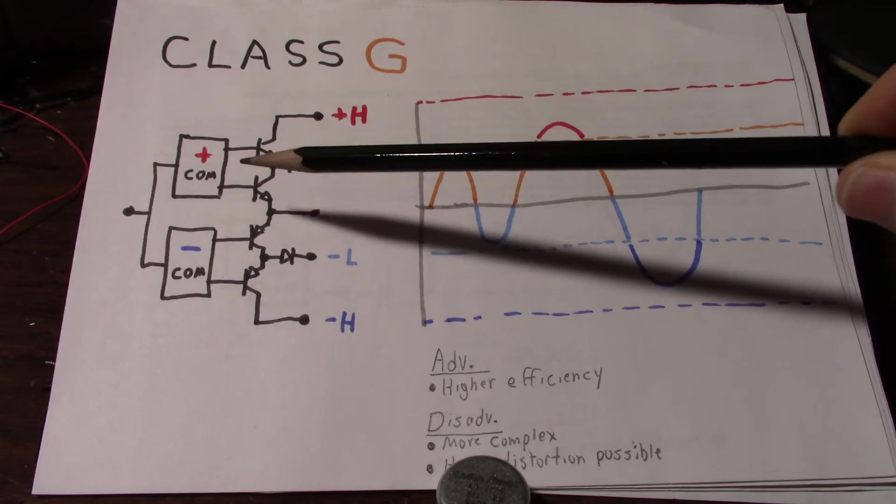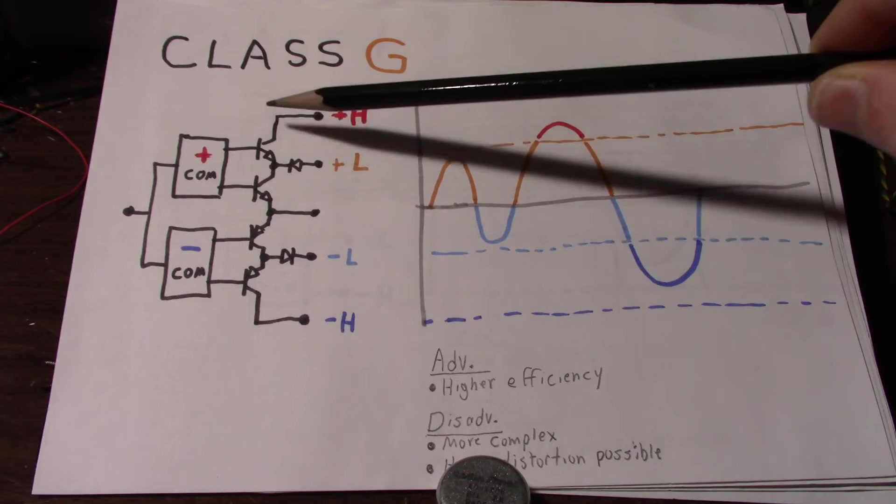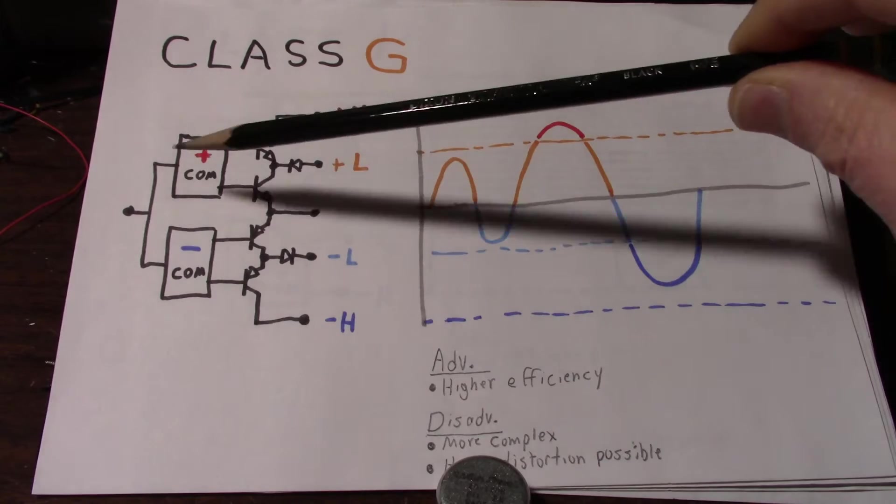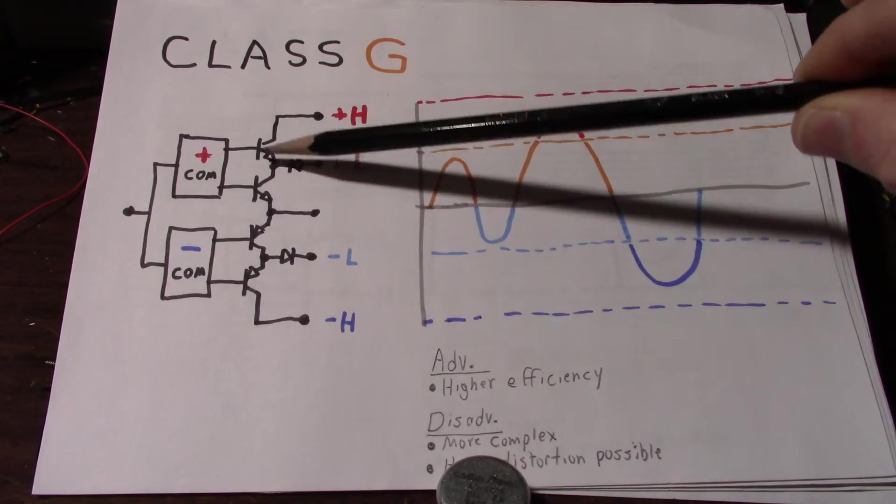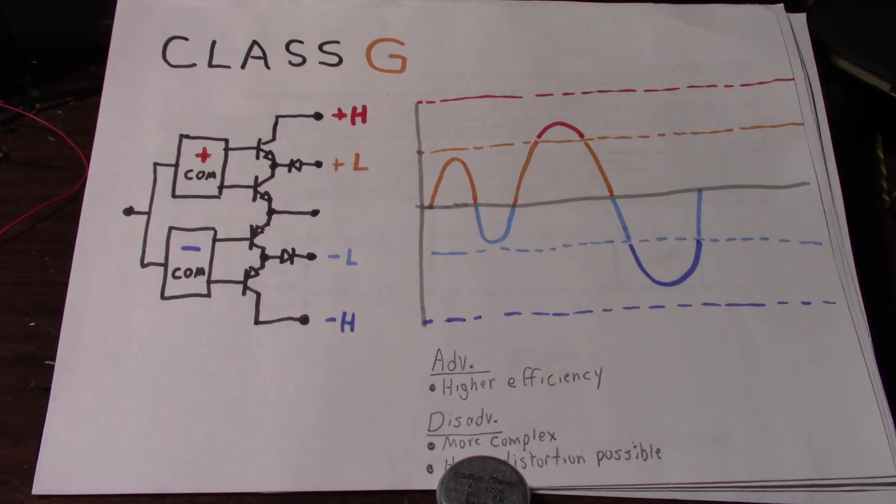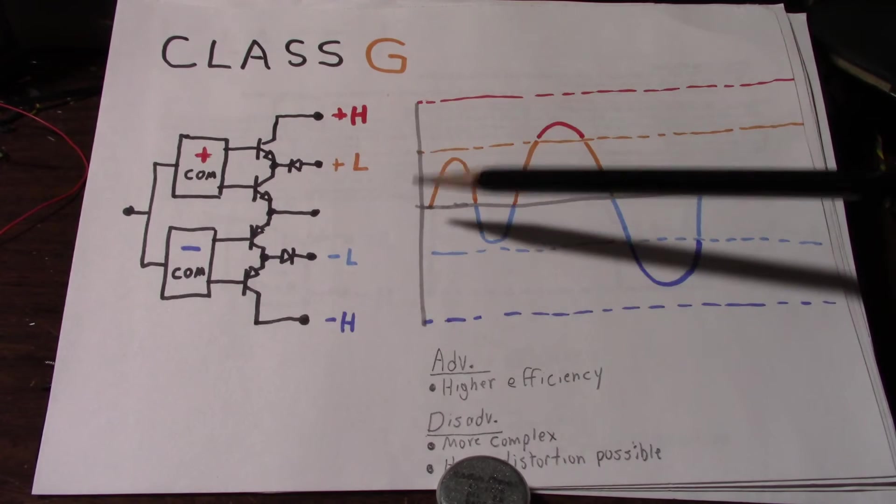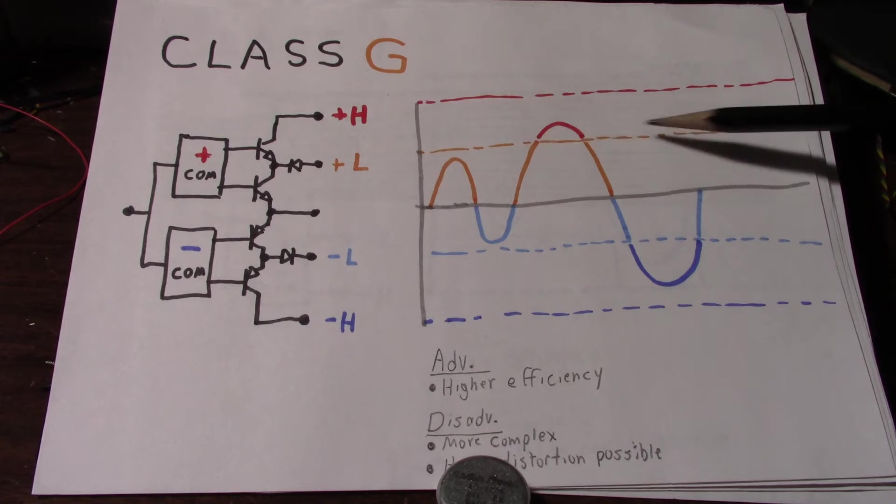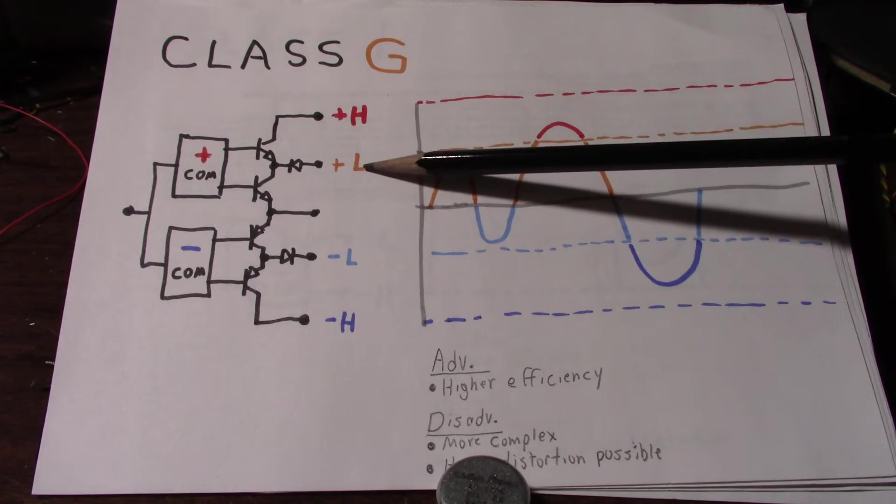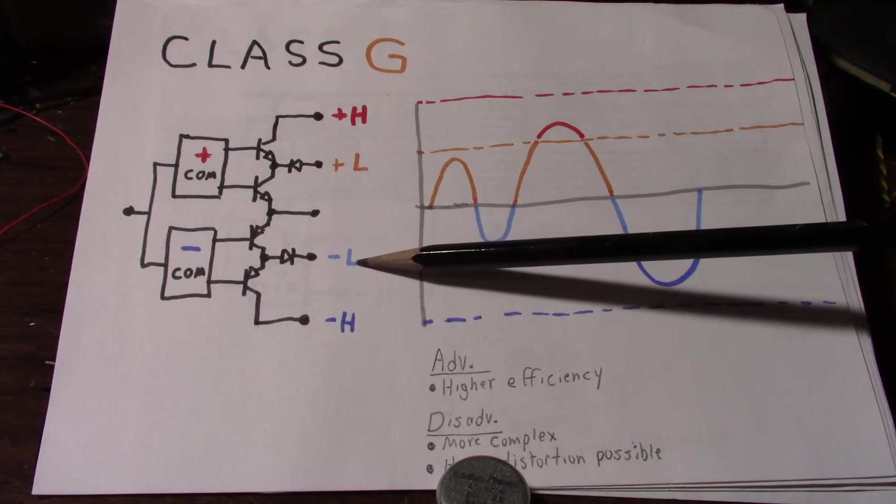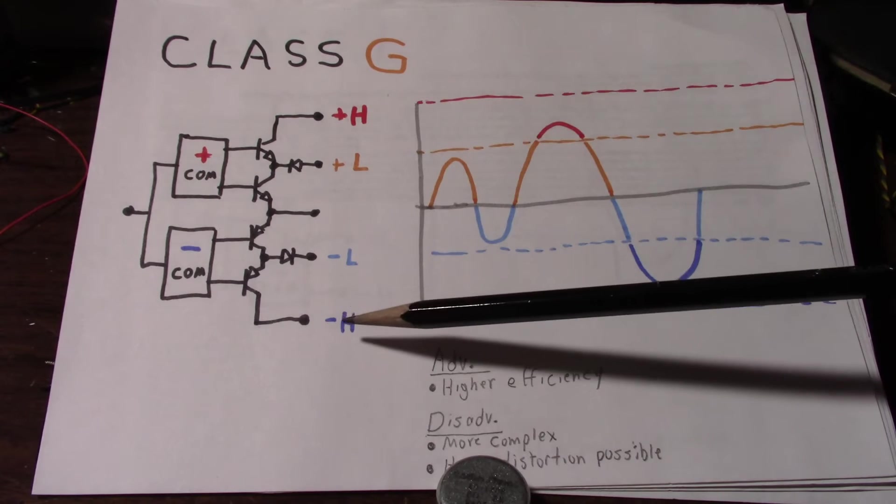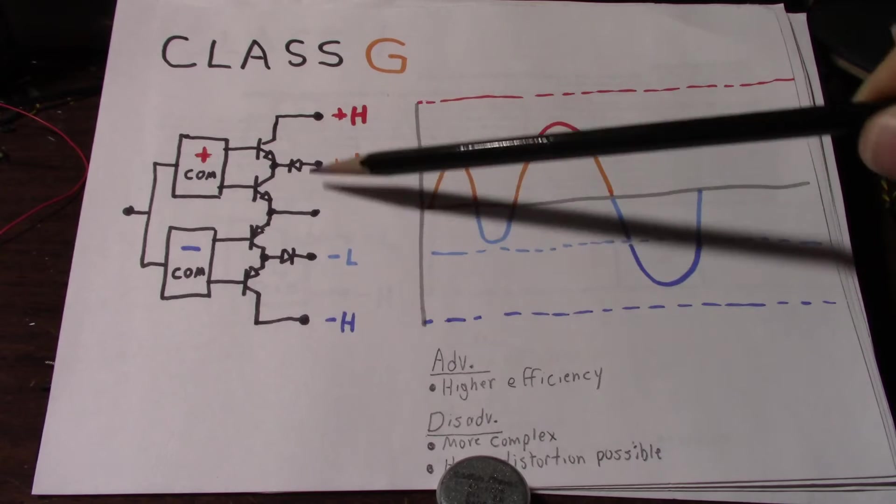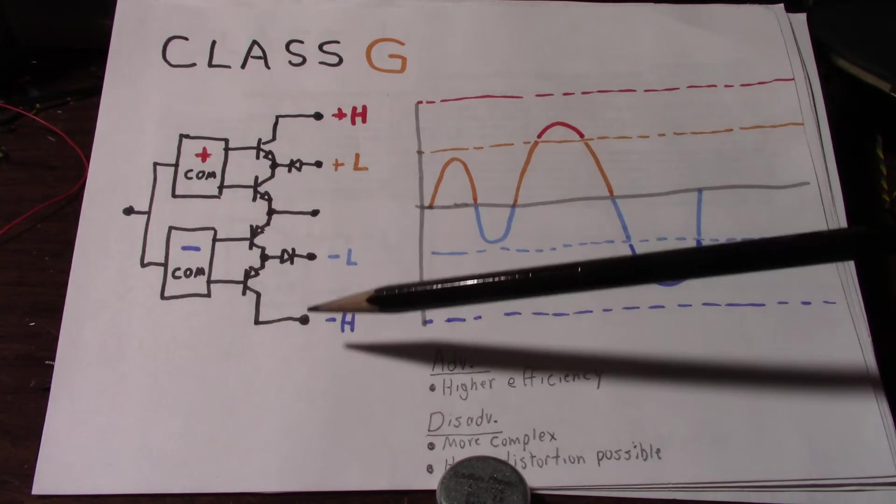This amplifier works on the principle of stacked output stages. So you have your regular Class AB output stage, but you stack on another output device with a higher supply rail. And you have commutation circuitry here that turns on the higher rail components when they are needed. So let's say you have a signal coming out of the amplifier, and it's not reaching beyond this rail voltage. What I'm showing here is the low rail positive and low rail negative. And then we have the high rail positive and high rail negative voltage.